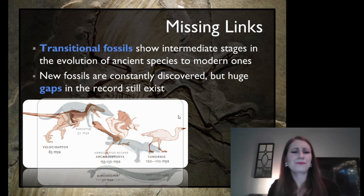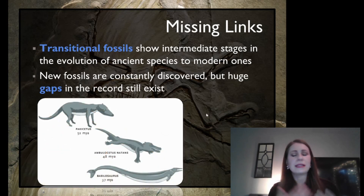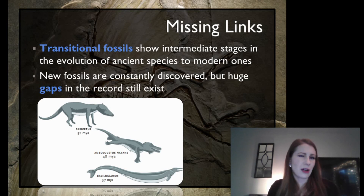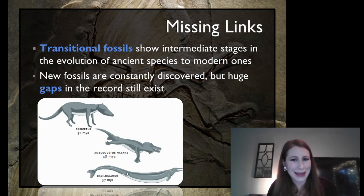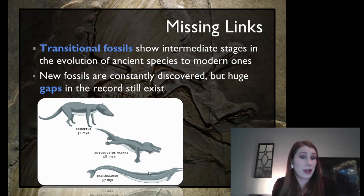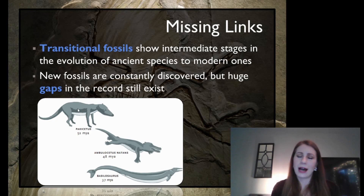Sometimes it's a little more linear and we can see it a little better. We have the Pachycetus, a four-legged creature that walked on land, transitioning to the Ambulocetus natans, which has some webbed features but a very similar head shape and bone structure, and then to the Basilosaurus, which looks kind of like a whale. It has tiny little back flippers that are pretty much useless — what we'd call a vestigial structure. In modern whales, you'll actually see the remnants of those bones, but they serve no purpose. This indicates that modern whales may have come from a land creature, with about 52 million years for this change to happen.